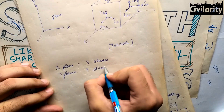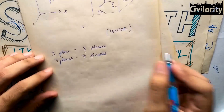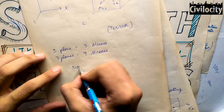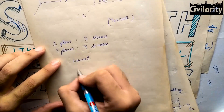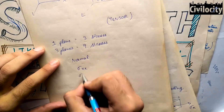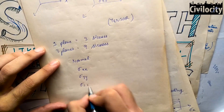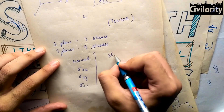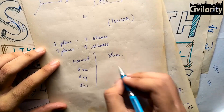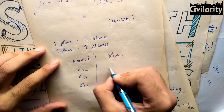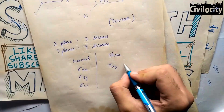Three planes give nine stresses in total: three normal stresses and six shear stresses. The normal stresses are sigma xx, sigma yy, and sigma zz. The first letter represents the plane — x means the yz-plane, y means the xz-plane, and z means the xy-plane — and the second letter represents the direction of stress.